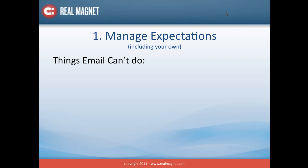That's the prelude. Let's move on to what the fundamentals are. The first is to manage expectations, including your own. There are some things that email can't do. The first is reach everybody — and I hear this all the time: 'We've got to let people know what's happening, let's send everybody an email.' Well, first of all, everybody is not on your list. There are people right in the sweet spot of your product or service offerings who you simply don't know about. But even if you mean everybody you do know about, unless you're consistently getting 100% open rates, you're not even reaching all of them.